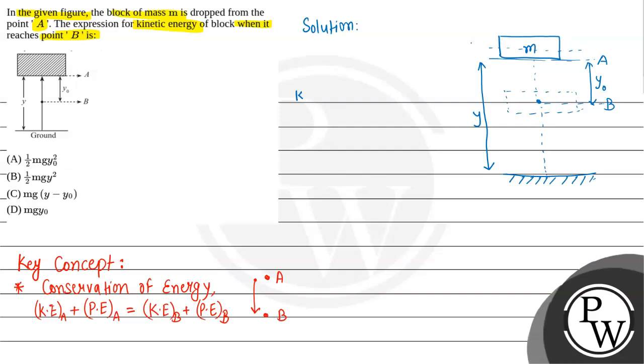Kinetic energy at point A plus potential energy at point A should be equal to kinetic energy at point B plus potential energy at point B.